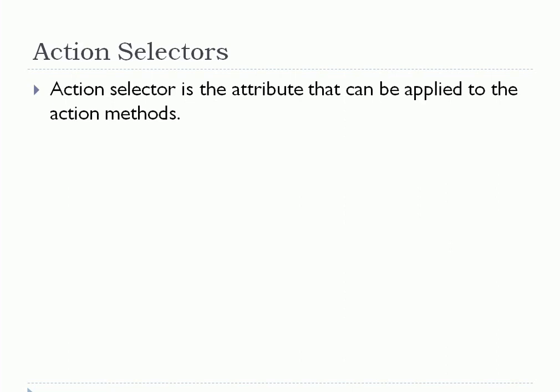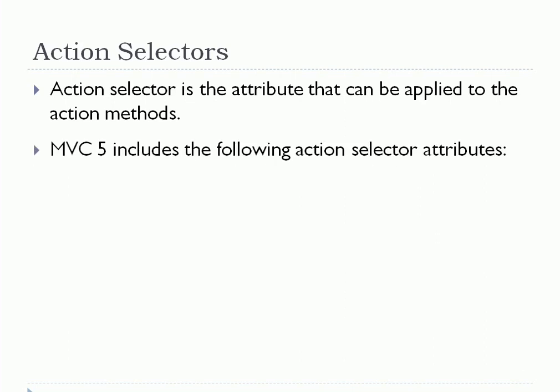Attribute classes are applied on a class or method, and syntactically they are applied before the definition of a class or before the definition of a method, inside square brackets. Now let us see what action selectors are available in MVC. There are three action selectors: first is ActionName, second is NonAction, and third is ActionVerbs. Let us see them one by one.